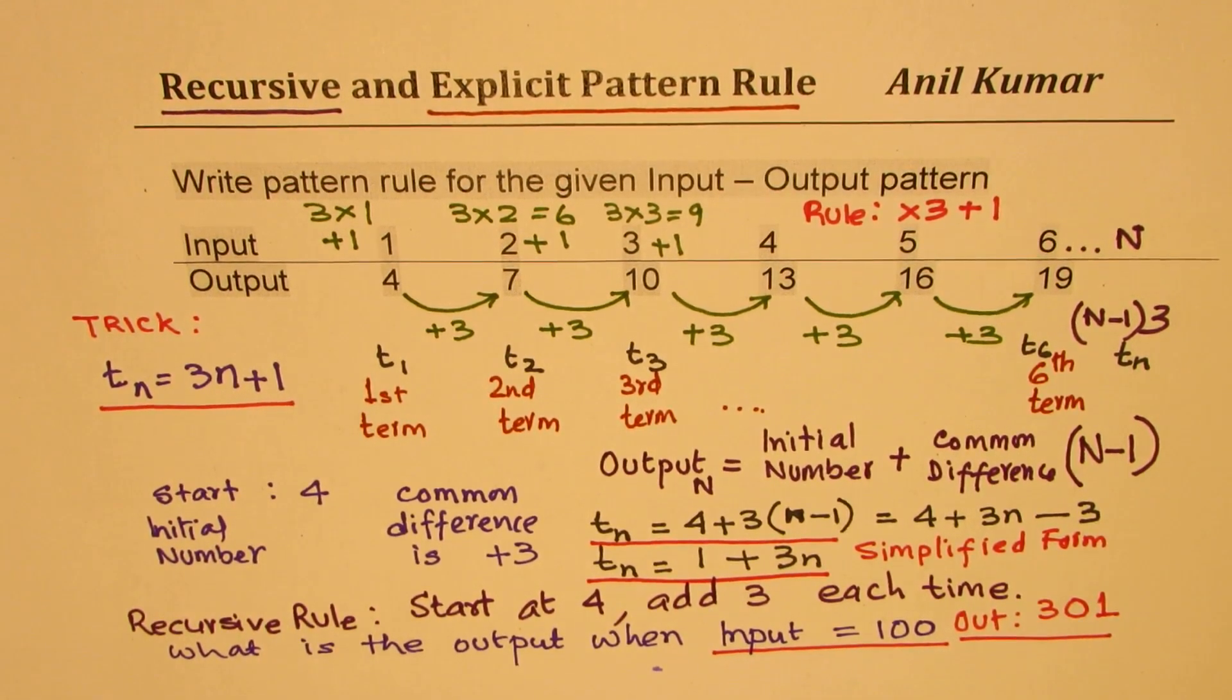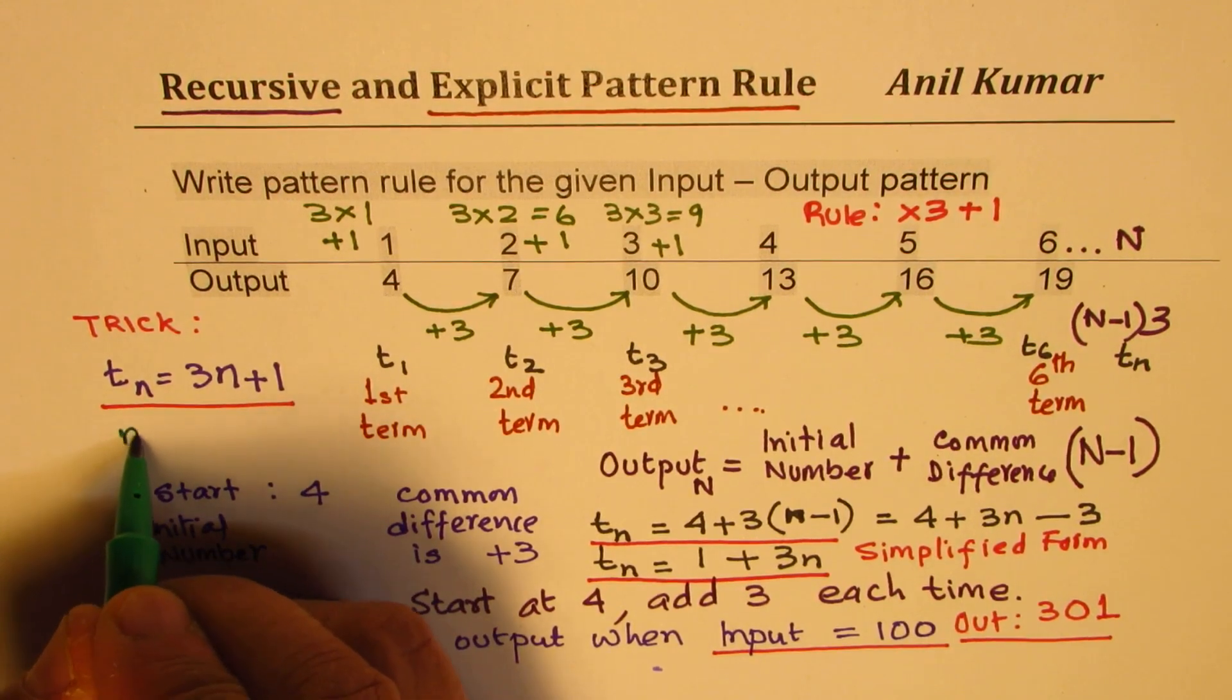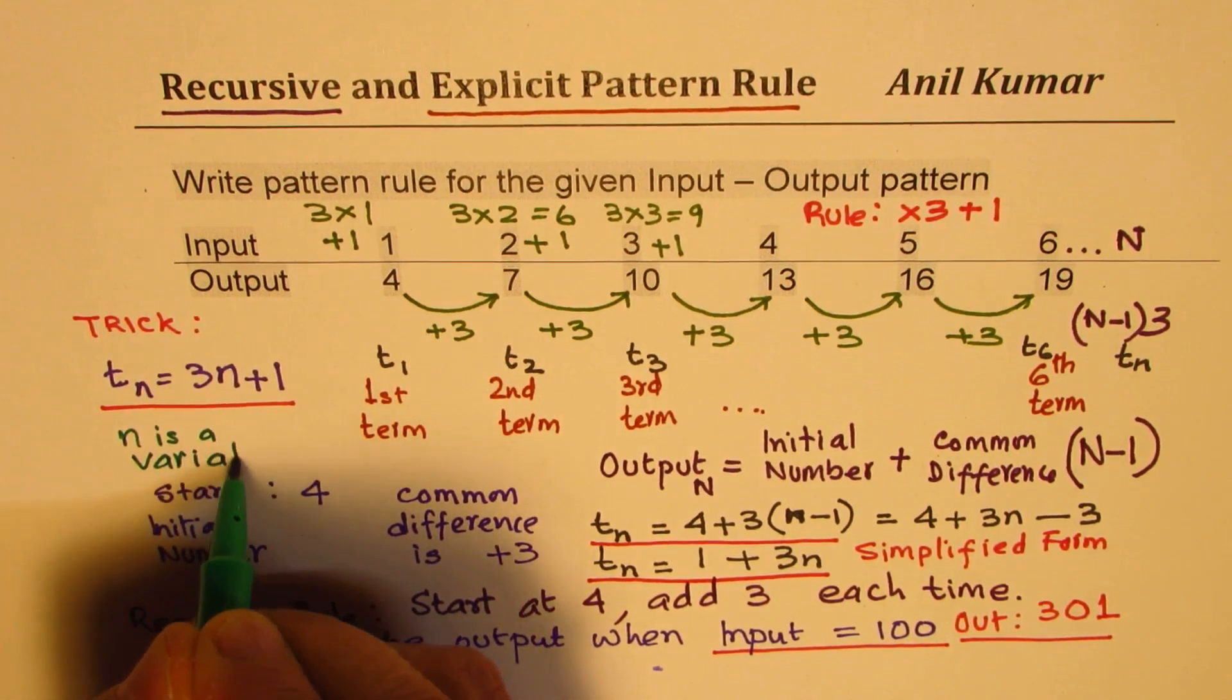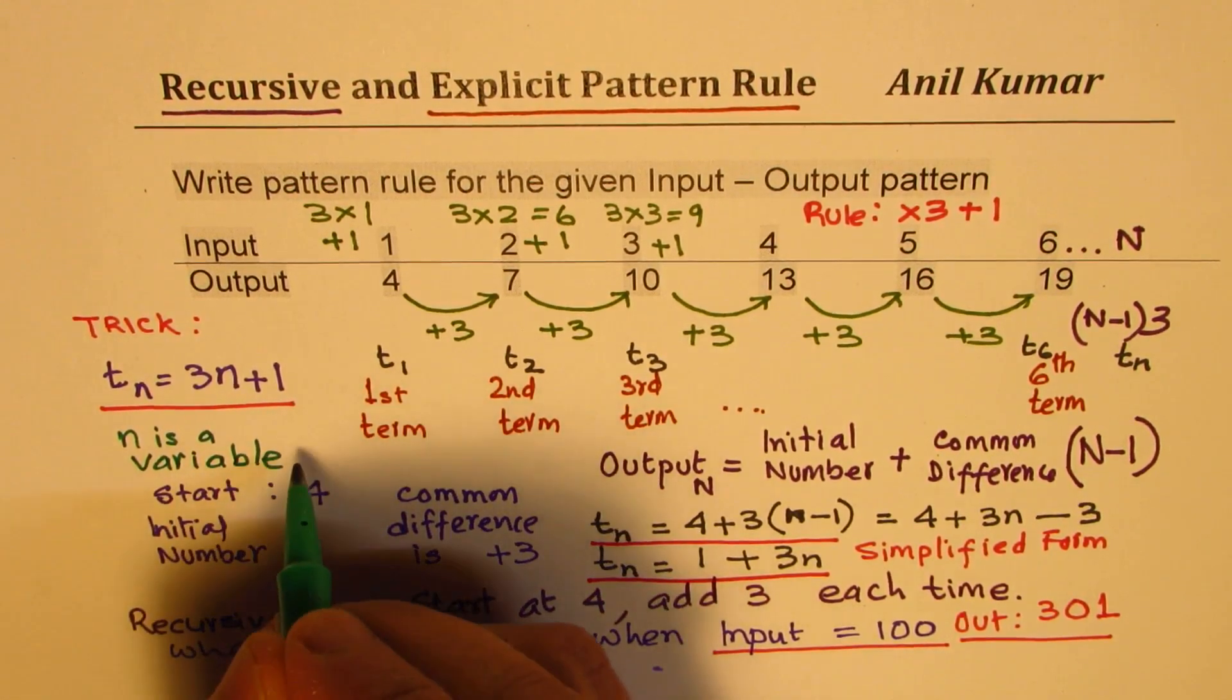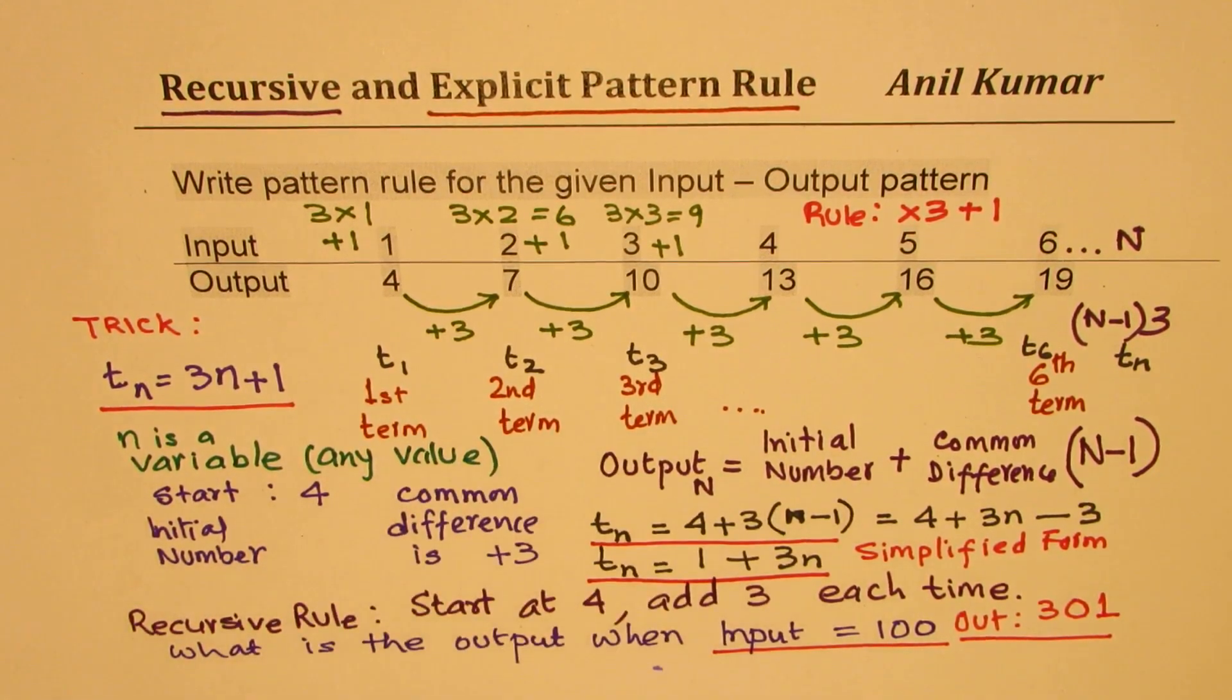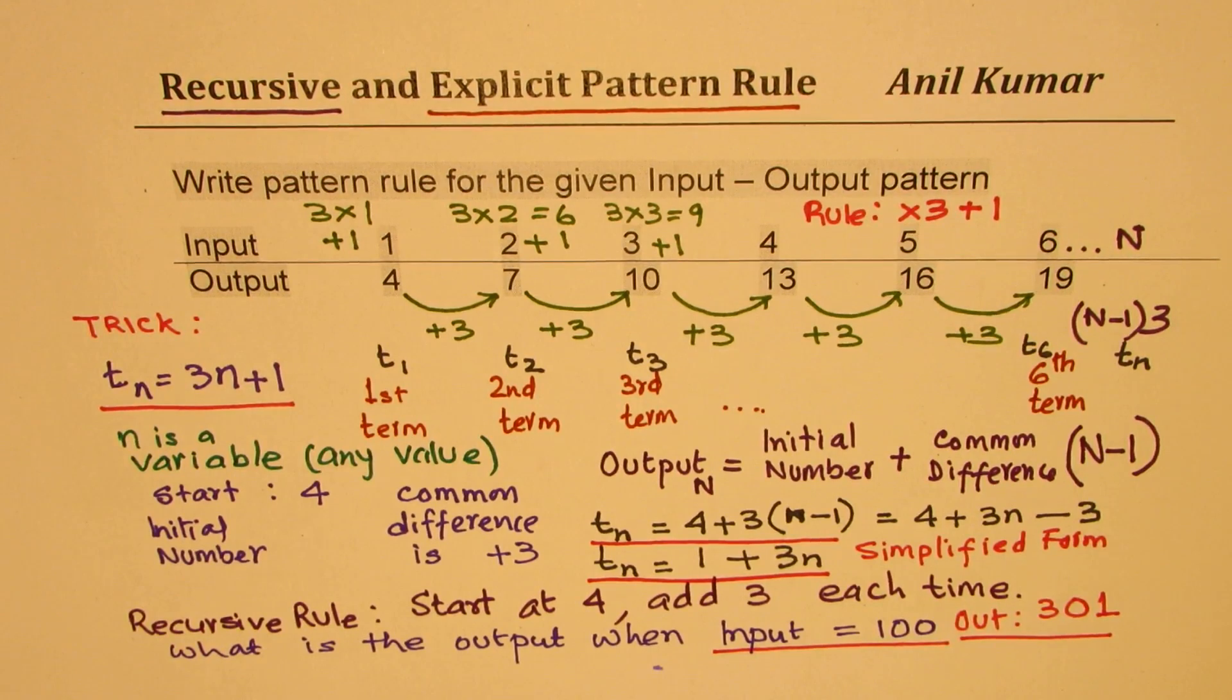So, remember, here n is a variable. n is a variable. Variable means it can have any value. Perfect. You can write n as 100, 1000, whatever you want. You will know what is the output for the given input n.